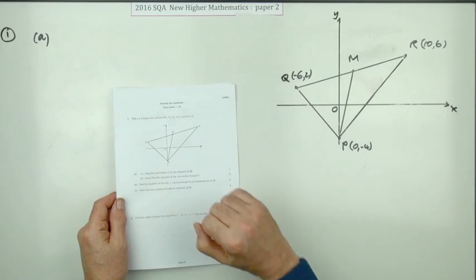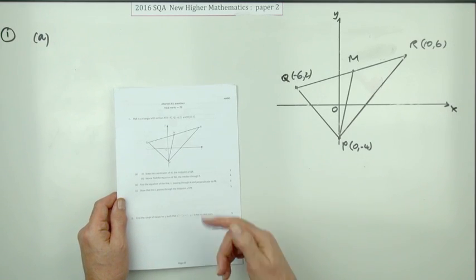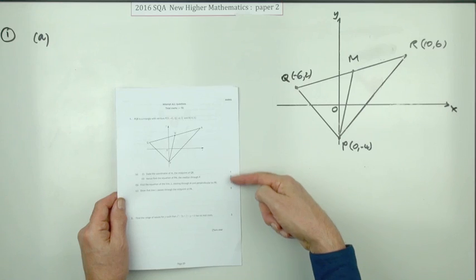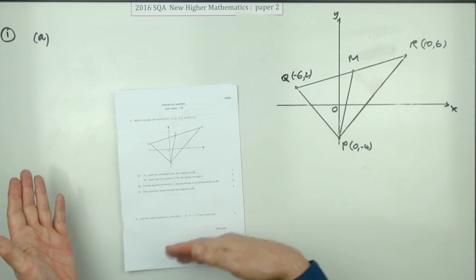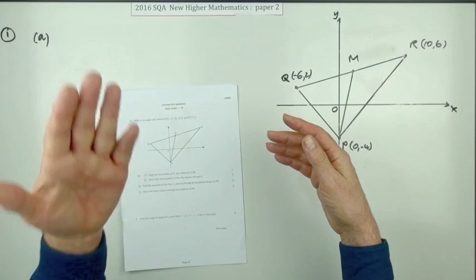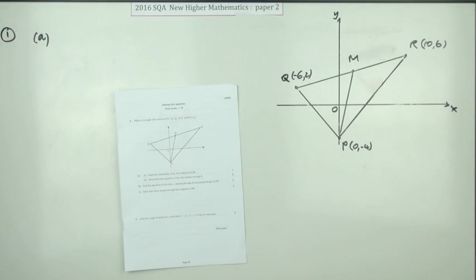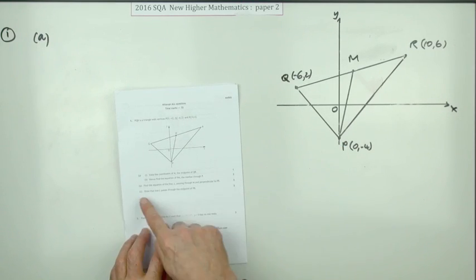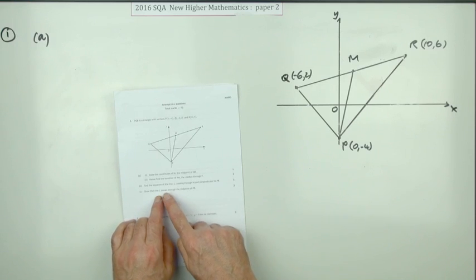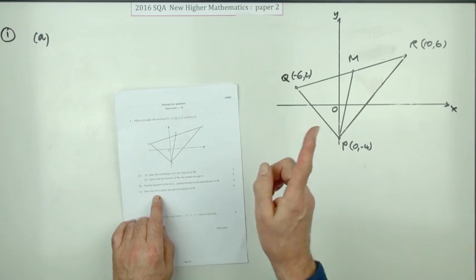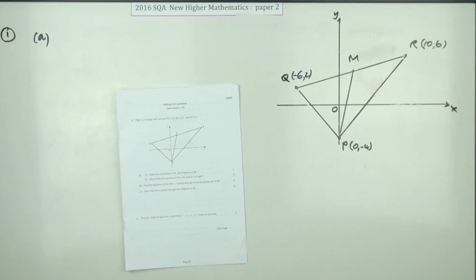So number one then from the second paper of the 2016 Higher Maths, here we go. The lines question, nine marks here, three parts. Usually the three parts would be something like find the equation of one line, find the equation of another line, and then find the point of intersection. Much the same here apart from the last part which is not what's the point of intersection, but show that the line passes through, or one of the lines, passes through a certain point.